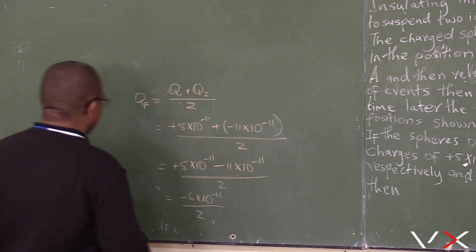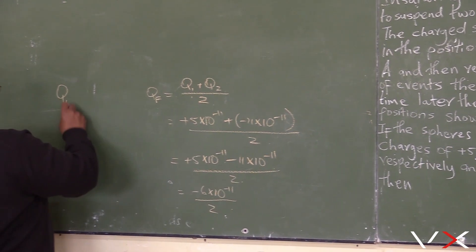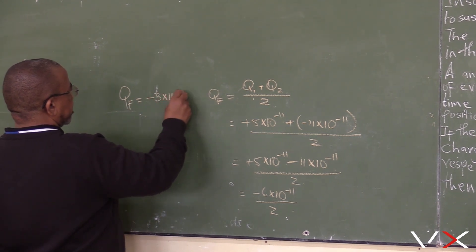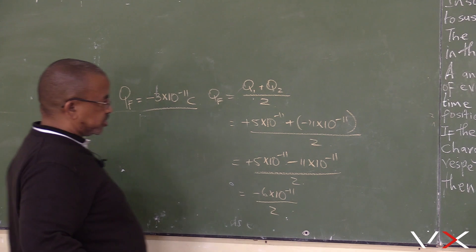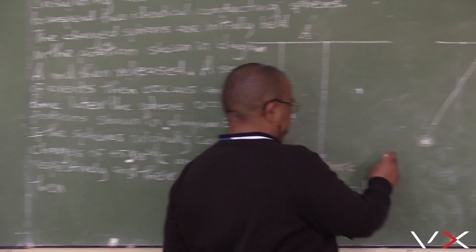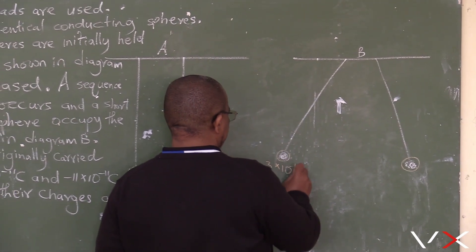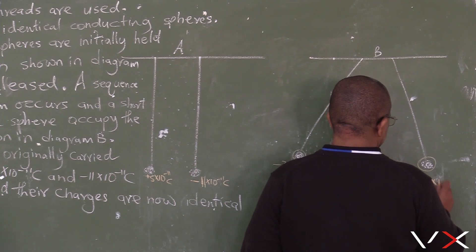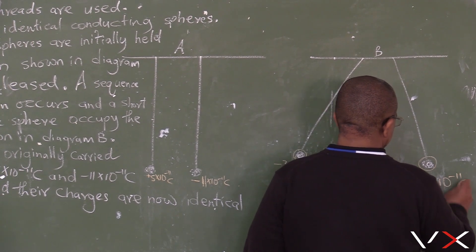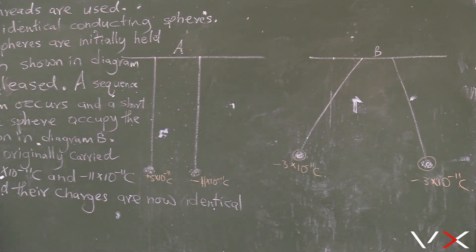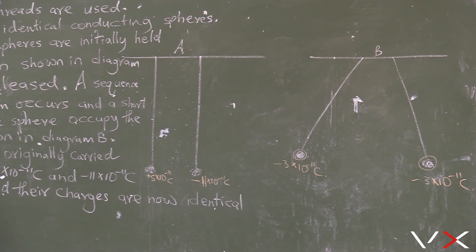So what will we have? The final charge will be minus 3 times 10 to the power minus 11, divide by 2. The final charge is minus 1.5 times 10 to the power minus 11 coulombs. So minus 1.5 times 10 to the power minus 11 coulombs on each sphere.